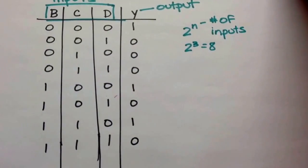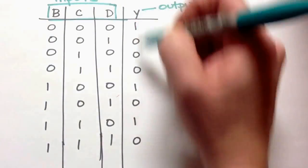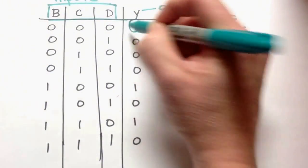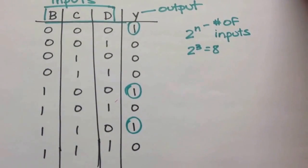And so as we look at this, we're going to have some terms everywhere Y is a one we want to include in the logic expression. So in those three places I've just circled.